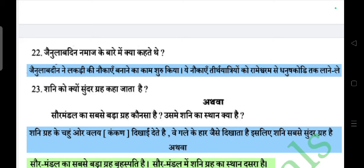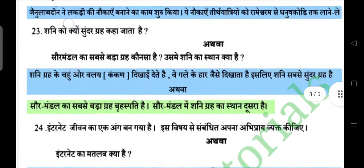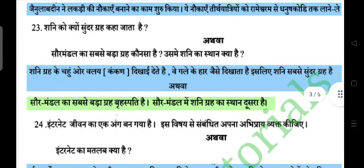Question: Shani ko kyun sundar grah kaha jata hai? Answer: Shani grah ke chaaron aur wale dikhayi dete hue galay ke haar jaisi dikhta hai, isliye Shani sabse sundar grah hai. Question: Sauramandal ka sabse bada grah kaunsa hai? Answer: Sauramandal ka sabse bada grah Brahaspati hai. Usme Shani ka sthan doosra hai.